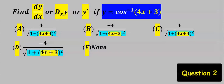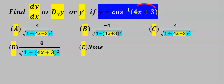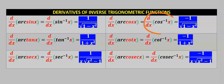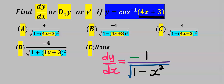Next, let's find the derivative of cos inverse of (4x plus 3). The first thing to observe is that 4x plus 3 has taken over the place of x. The derivative of cos inverse of x is minus 1 divided by the square root of 1 minus x squared. Differentiating 4x gives us 4.